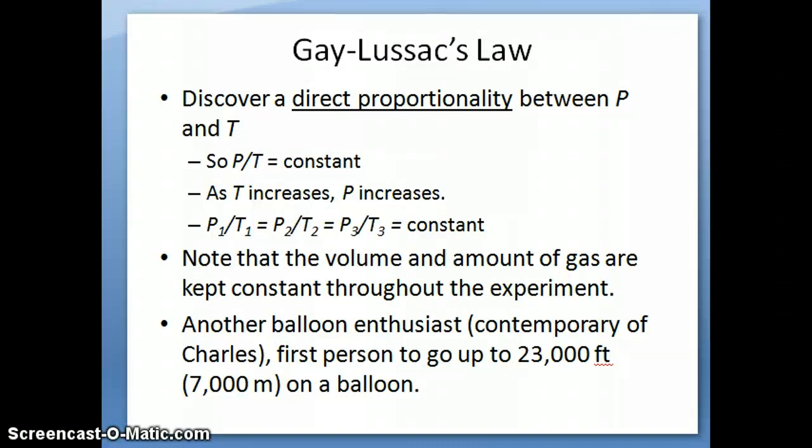Now, a person whose work kind of parallel Charles's is a friend of his, which was named Gay-Lussac, Joseph Gay-Lussac. What he discovered was fairly similar in terms of properties to what Charles discovered. He discovered direct proportionality, in this case, between pressure and temperature. So he found that pressure over temperature is constant. In other words, when you increase temperature of a gas, the pressure also increases.